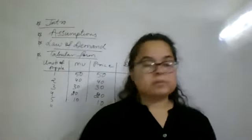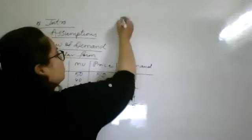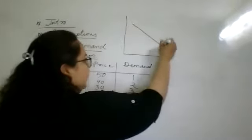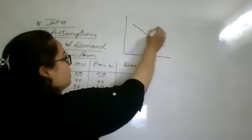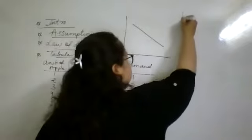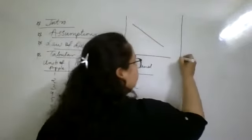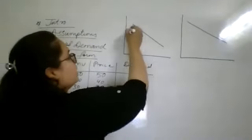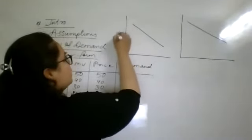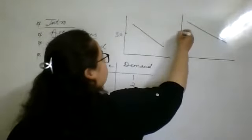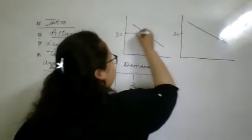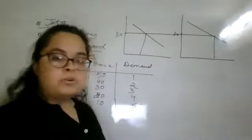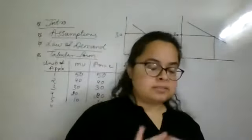Demand doesn't matter. Make a direct graph, there is no problem. So we have created a marginal utility graph and simultaneously we have made the demand. Same as it is, we will see that if we are 30, then here we will be 30. And what will happen? We will come in two similar points.